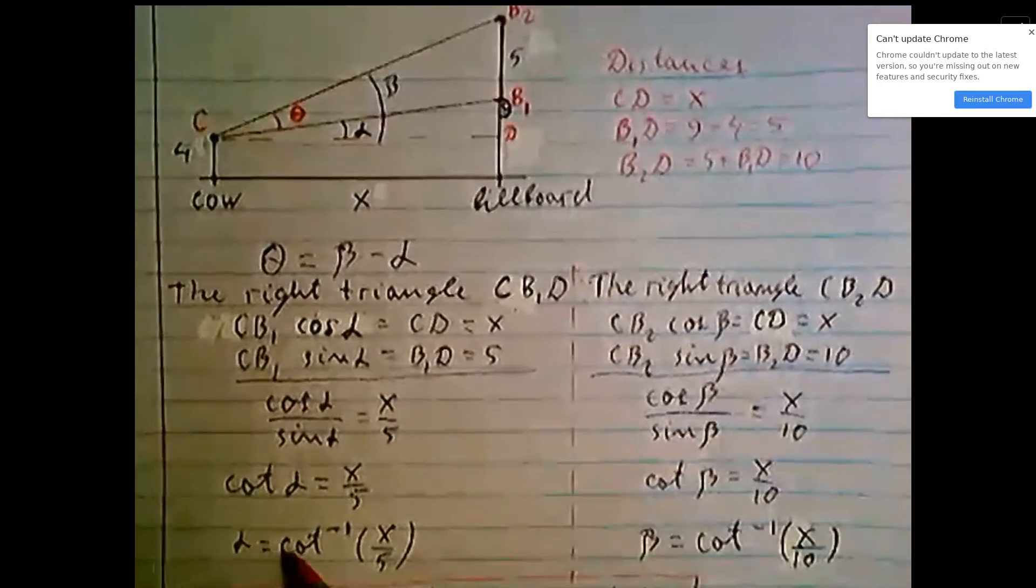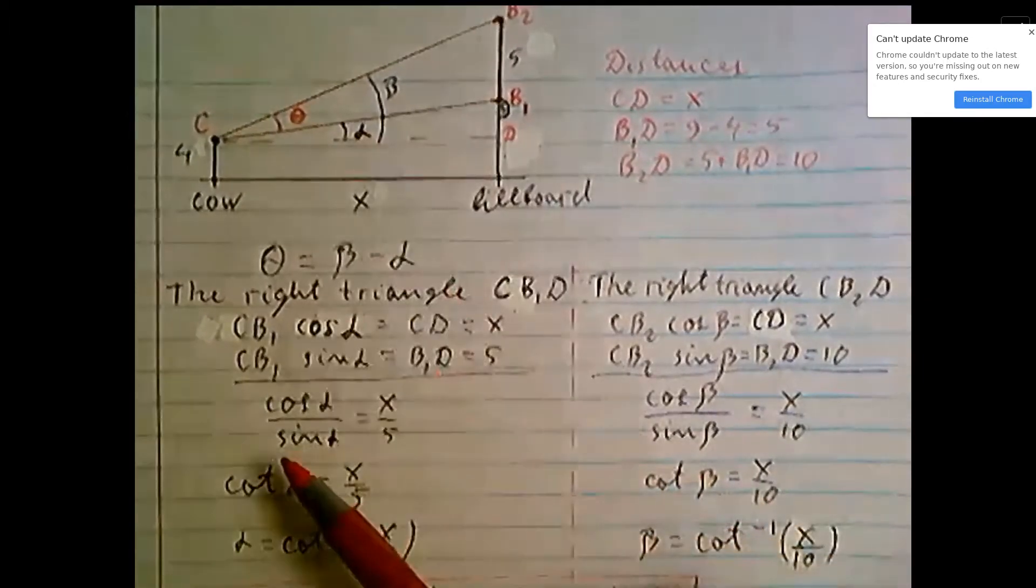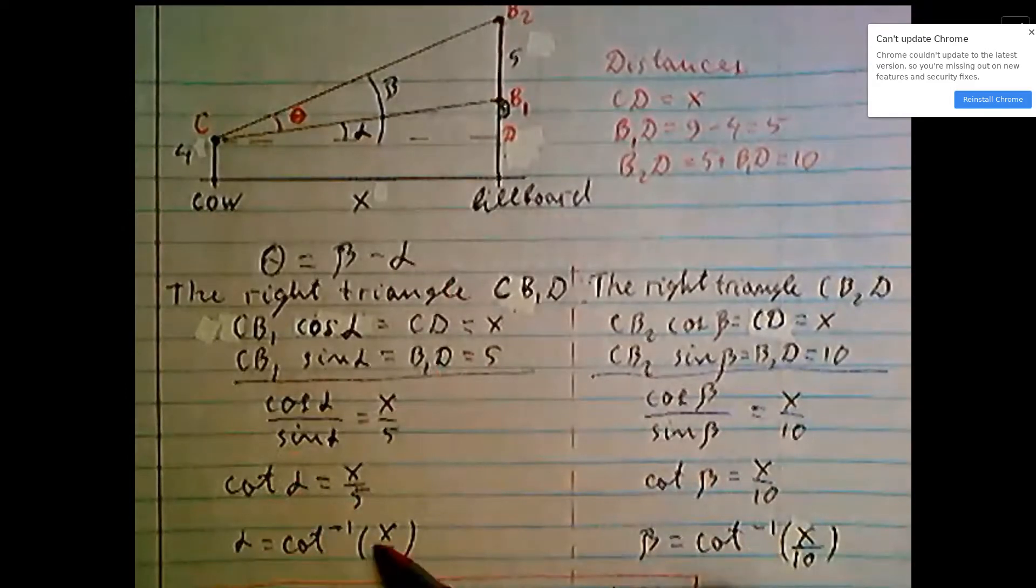So angle alpha, because it's an acute angle, is the inverse cotangent of x divided by 5.